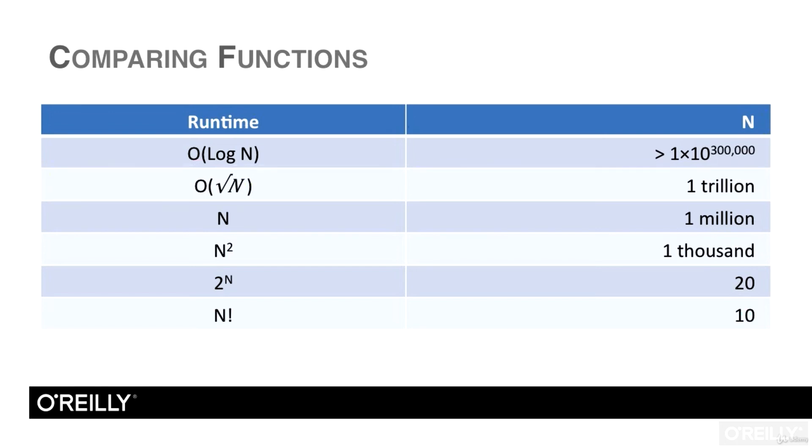The order square root of n algorithm can handle 1 trillion inputs in one second. That's a lot fewer than the inputs the order log n algorithm can handle, but it's still probably more inputs than you can store on your computer. The order n algorithm can handle 1 million inputs in one second. Still a lot, but you can see the limits are coming.